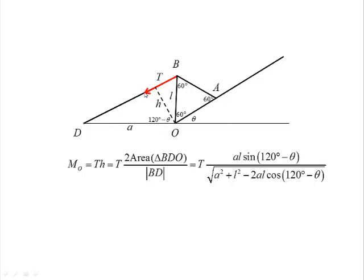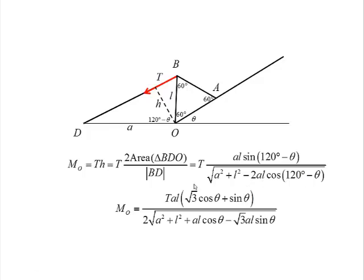The length of BD could be found by using the law of cosines, which gives us this expression. It can be simplified to obtain the following expression.